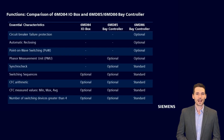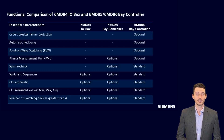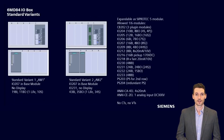Therefore, in the base housing, an IO207 module is built in instead of an IO202 module. The table shows the available functionalities in comparison to the Bay Controller 6MD85 and 6MD86. Functionality which requires CT and/or VT connection is not possible in the 6MD84. The listed IO modules can therefore be used as extension to a 6MD84-based module because they do not contain CTs and/or VTs.